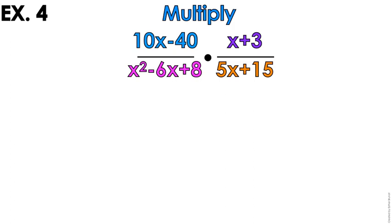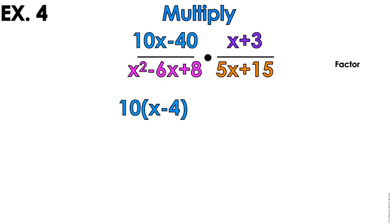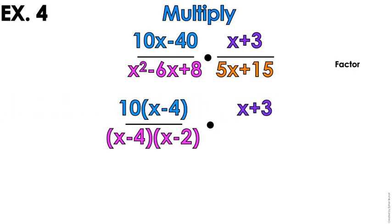Number 4. We're halfway done. We're going to multiply, but we're doing binomials and trinomials. So you want to check if you can factor first. The blue part has a GCF of 10. The pink part is a trinomial where a equals 1. We're going to factor that. The purple part is prime. And the orange part has a GCF.